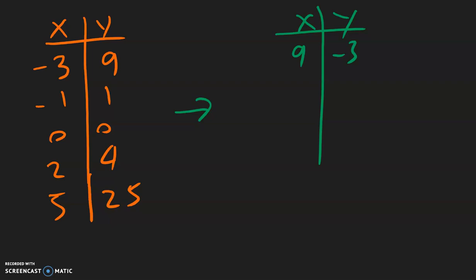Negative 1, 1 becomes 1, negative 1. 0, 0 will be 0, 0. 2, 4 will be 4, 2. And 5, 25 will be 25, 5.